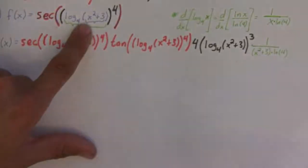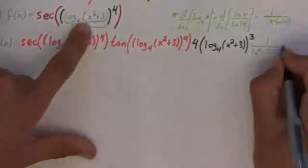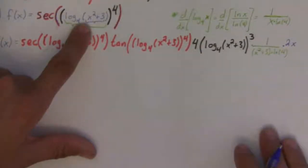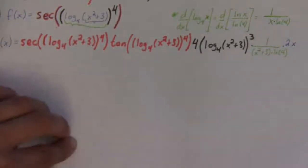And, then we move one more in. Now, we are at the blue. The derivative of the inside of the log is 2x. And, that's it. We've gotten the derivative.